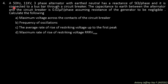Fourth question. A 50 Hz, 11 kV, 3-phase alternator with earth neutral has a reactance of 5 ohms per phase, connected to a bus bar through a circuit breaker. The capacitance to earth between the alternator and the circuit breaker is 0.02 microfarad per phase. Assuming resistance of the generator is negligible, calculate: maximum voltage across contacts, frequency of oscillation, average rate of rise of restriking voltage (RRV) up to the first peak, and maximum RRV.